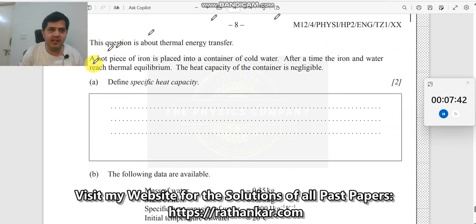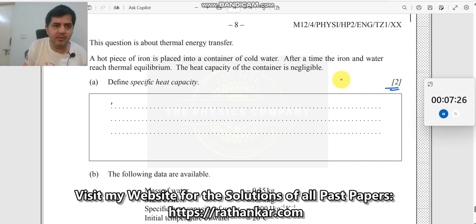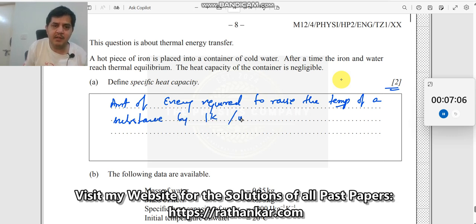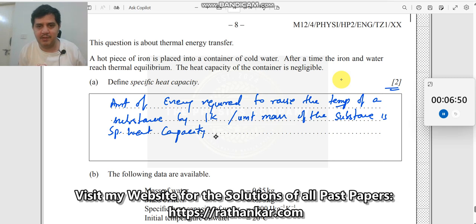This is about thermal energy transfer. A hot piece of iron is placed into a container of cold water, and after a long time, the iron and water will reach thermal equilibrium. The specific heat capacity of the container is negligible. So, we will define specific heat capacity. You need to write amount of energy required to raise the temperature of a substance by 1 Kelvin per unit mass of the substance is specific heat capacity. Handwriting is not so good because I am reading faster. You can also listen to it and write it.